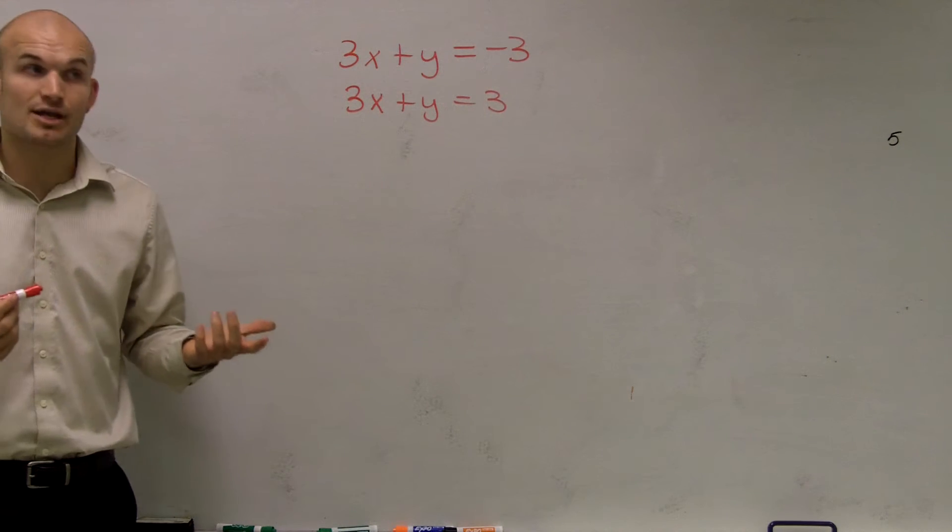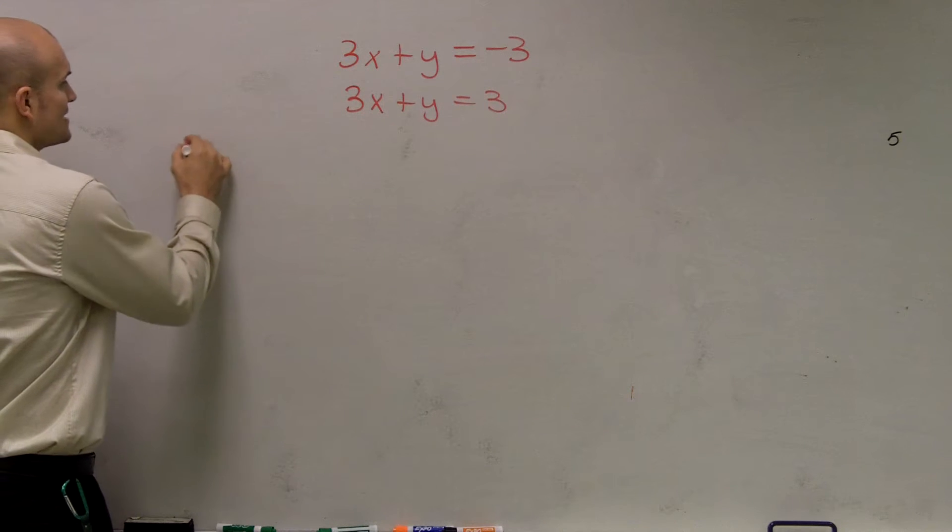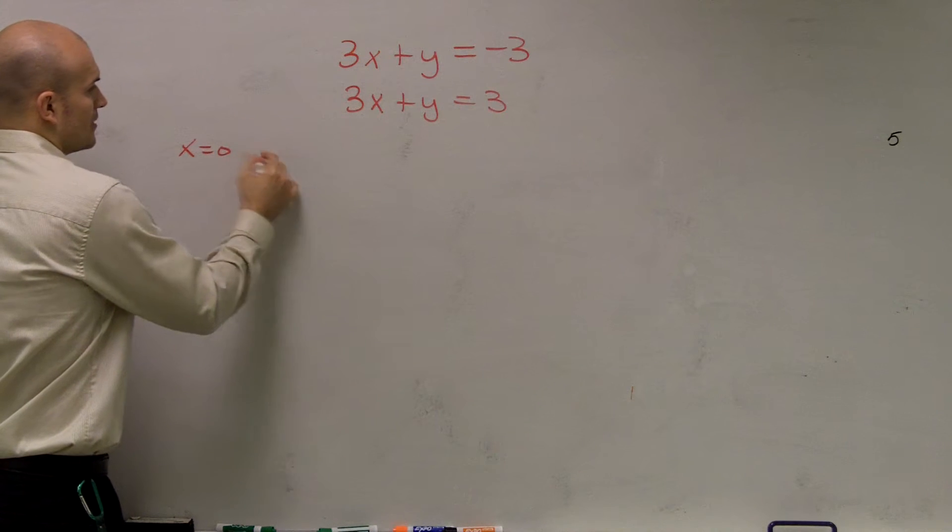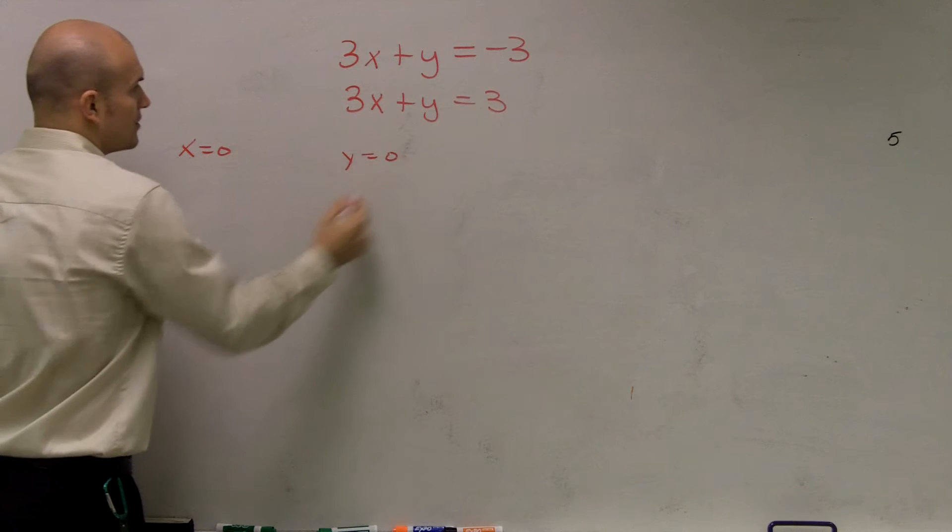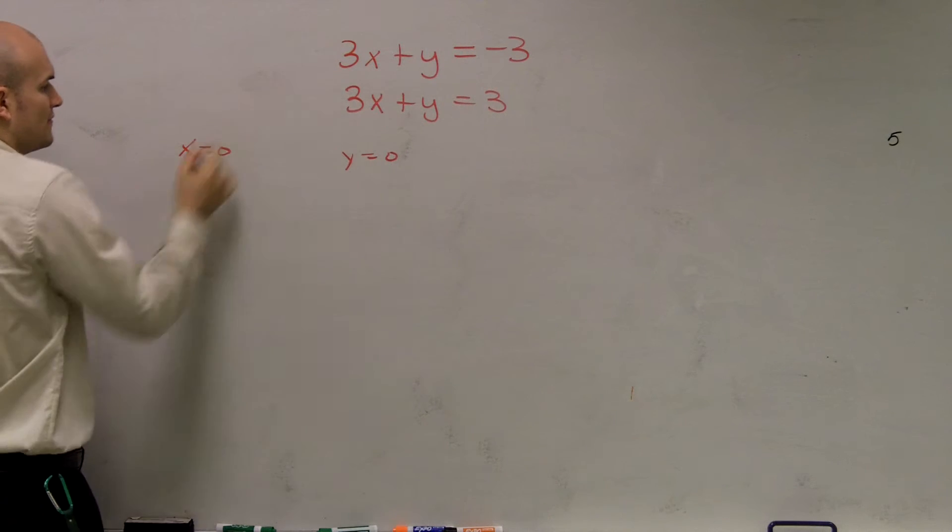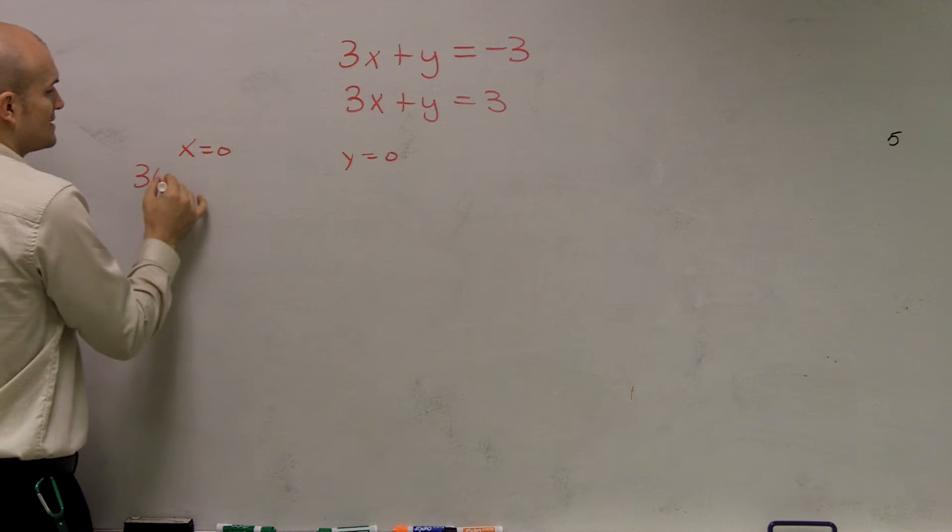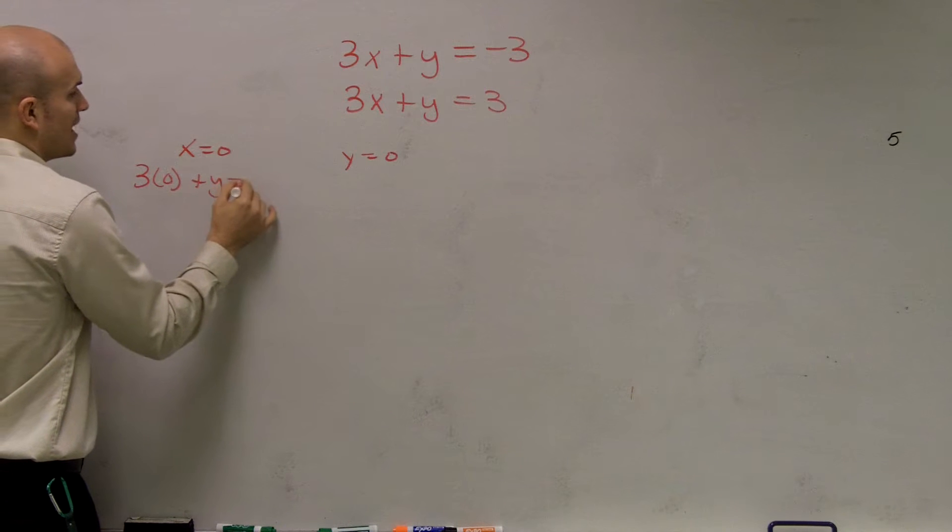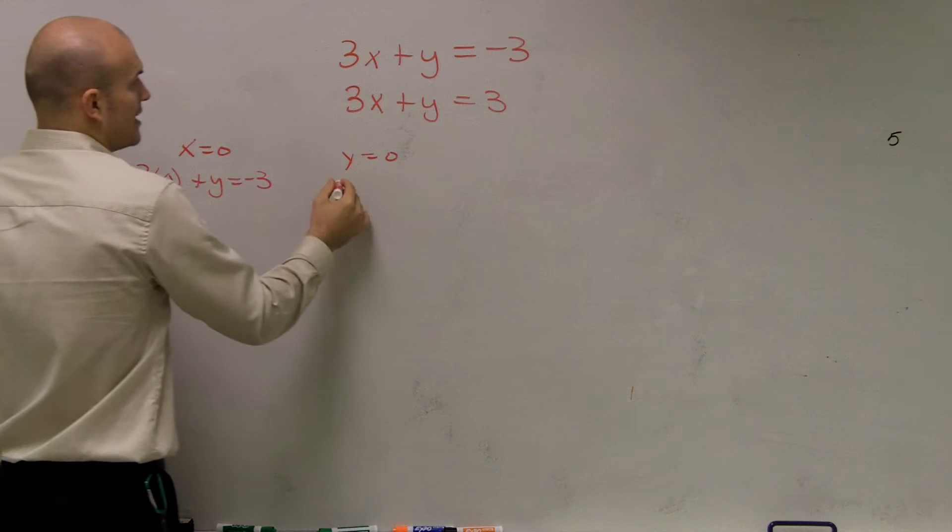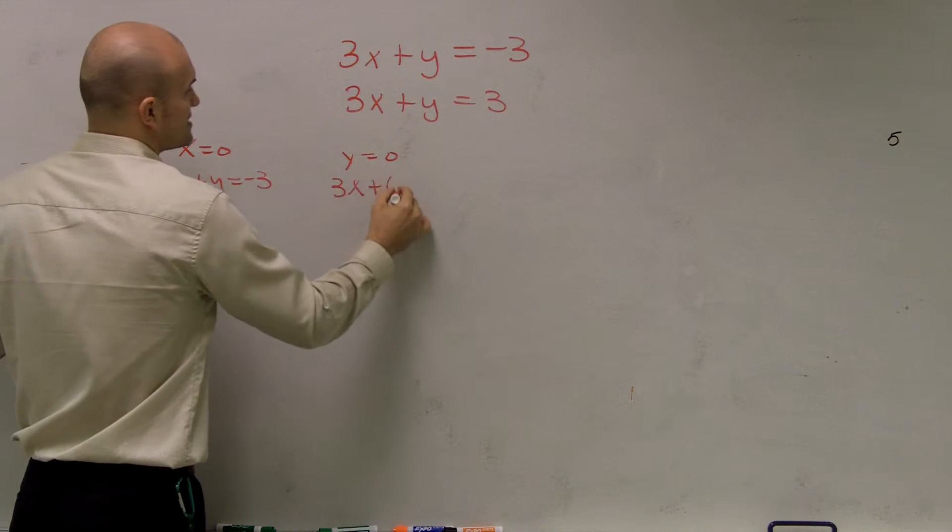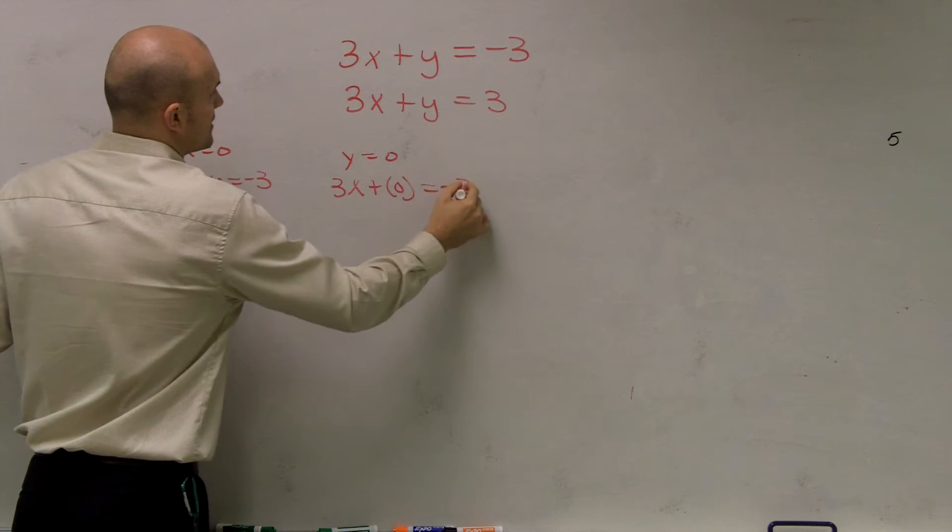One method is called the x and y intercept method, where you say x equals 0 and then y equals 0. So when x equals 0, let's do the first problem this way. So I'd say 3 times 0 plus y equals negative 3. And then I'd say 3x plus 0 equals negative 3.